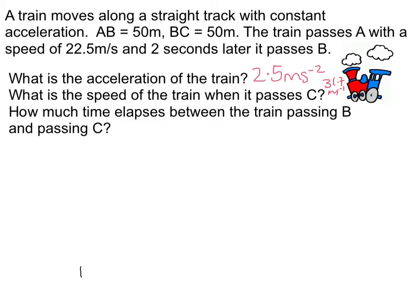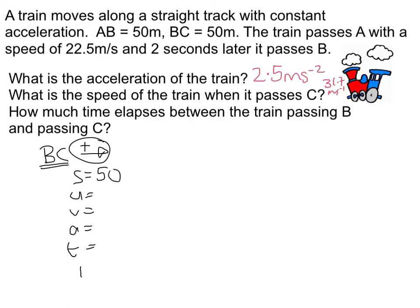Finally, the time elapsed between the train passing B and C. My SUVAT is on BC, taking right to be positive. I know the displacement from B to C is 50 metres. I know the velocity at C is 31.7, and the acceleration is 2.5. I don't actually know the velocity at B, but that's fine — I need the equation without U in, which is S equals VT minus a half AT squared.